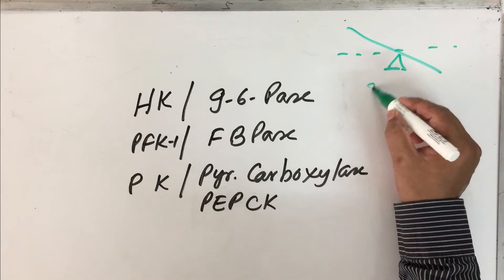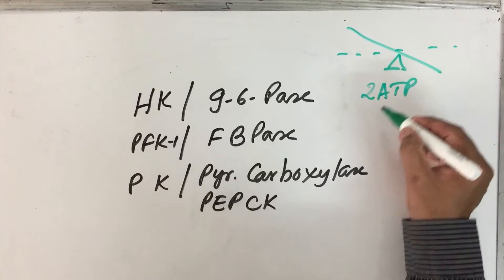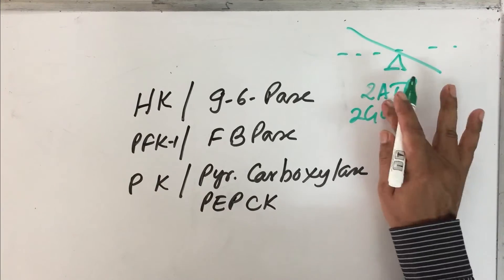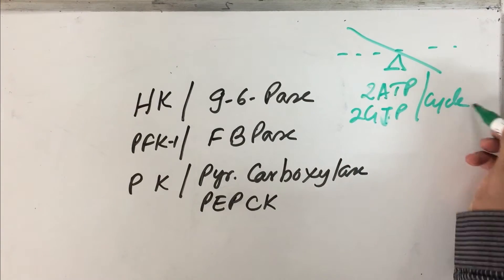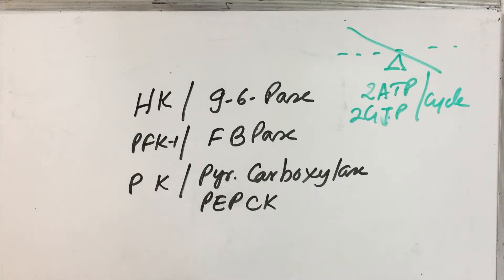Otherwise, we will be wasting 2 ATP, 2 GTP per cycle. This will be the net waste if these two pathways are not regulated. Therefore, these are reciprocally regulated.